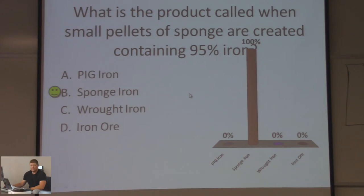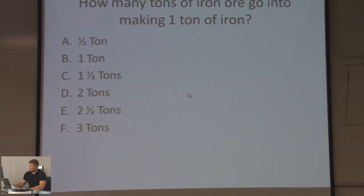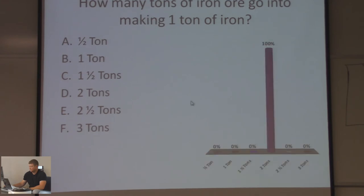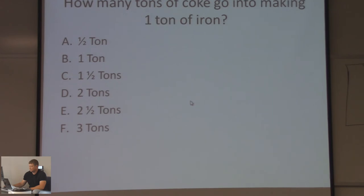It was in the question, so hopefully you didn't miss that one. How many tons of iron ore go into making one ton of iron? Half a ton, one and a half tons, two tons, two and a half tons, or three tons? It was two tons — the correct answer. Two tons go into making one ton. That's your iron ore.